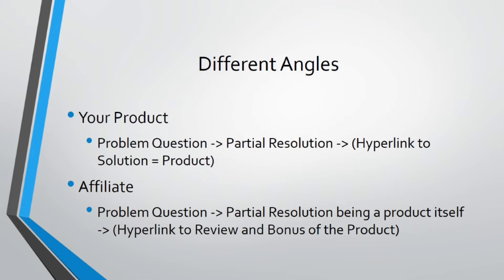As an affiliate, you could send them directly to your affiliate link. But to get better high conversions, you might want to do problem question, partial resolution featuring the product itself, and then a hyperlink to a review and bonus. So you could link them to a review, a comparison chart, and then at the end of that landing page provide some sort of valuable bonus. If they buy through your affiliate link, you get commission — so they have more incentive to buy through your link.